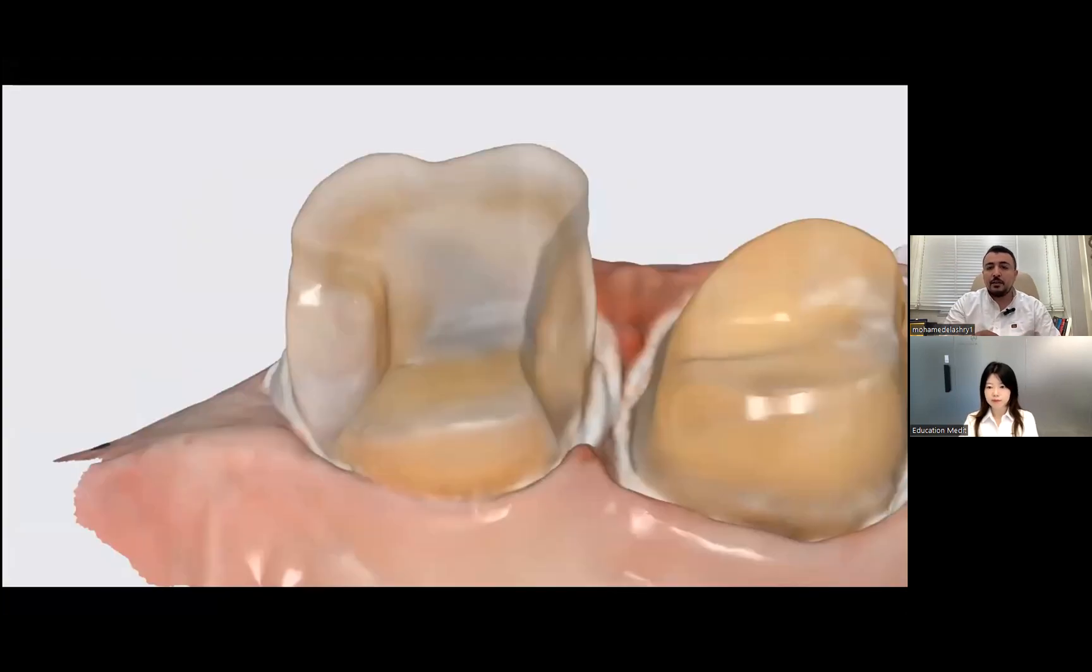Another important thing for the partial coverage restoration and intracoronal restorations. For the extracoronal restoration, we need more taper. But for the intracoronal, we need more divergence of the wall. To be able to record this internal line angles, we have to make very flaring of the walls to be able to tell the scanner to record these areas.